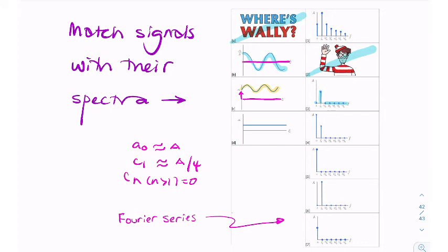So looking at this, could it be this one here? Could it be this spectrum? Well here it has a DC value of a.